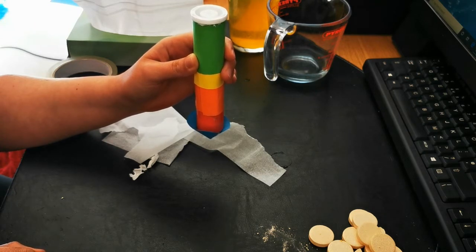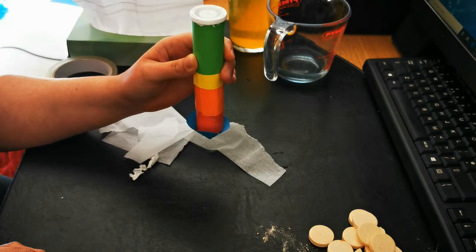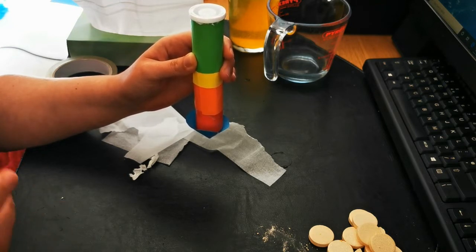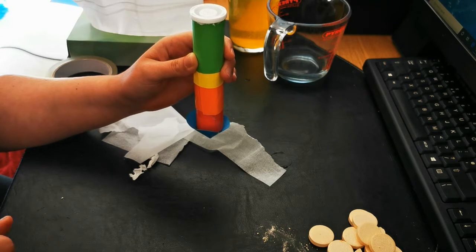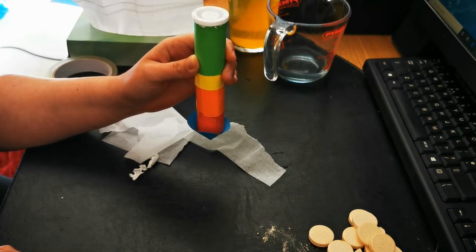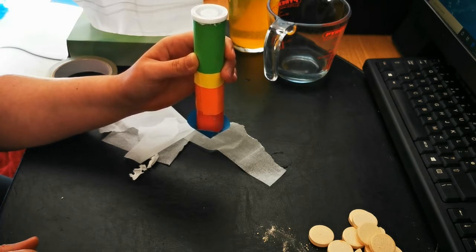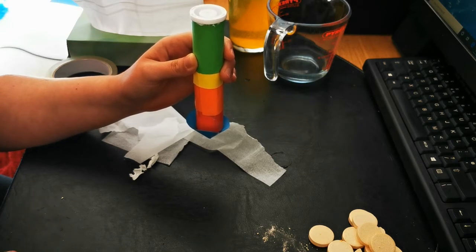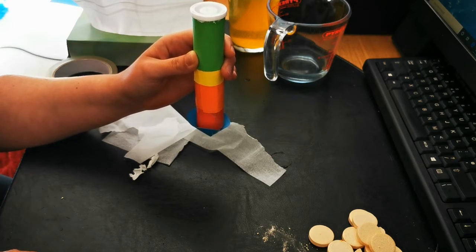Now when you do this experiment outside you must make sure that you've got a nice clear space around you so you don't lose your rocket on someone's roof for example, and you must make sure that there's not anybody who is standing too close because if it falls on their head it could bonk them on the head a little bit.